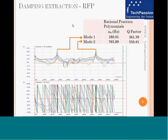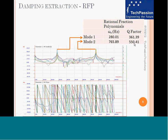This procedure can be repeated for multiple modes or resonances in the frequency response function, allowing extraction of modal parameters — resonant frequency, damping, and mode shape — for all modes. The results from curve fitting for the first and second mode show: the first mode resonant frequency is at 280 Hz with a Q factor of 361.39, and the second mode resonant frequency is 765.89 Hz with a Q factor of 550.41, both analyzed using rational fraction polynomial curve fitting.